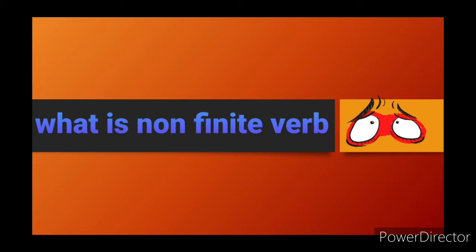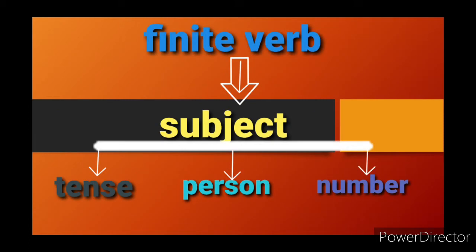There are three different parameters on which its limitation is fixed. First is tense — that is, the subject is performing the action in the past, present, or future. Second is person — that is, the subject is first, second, or third person. Third is number — that is, the subject is singular or plural. So a finite verb will change as per the tense, as per person, and as per number.